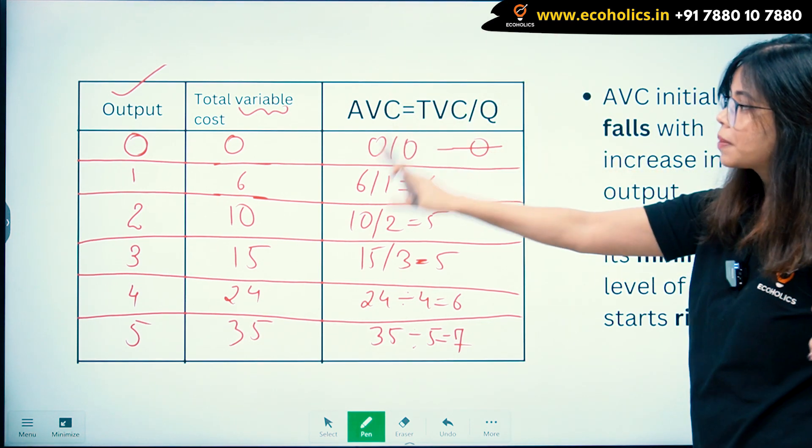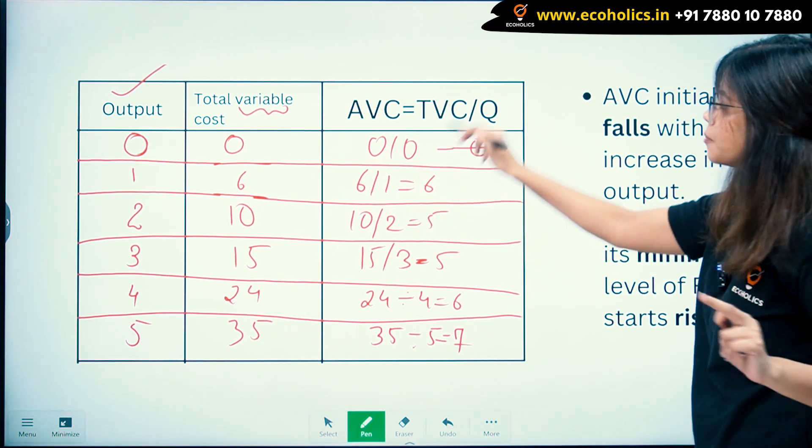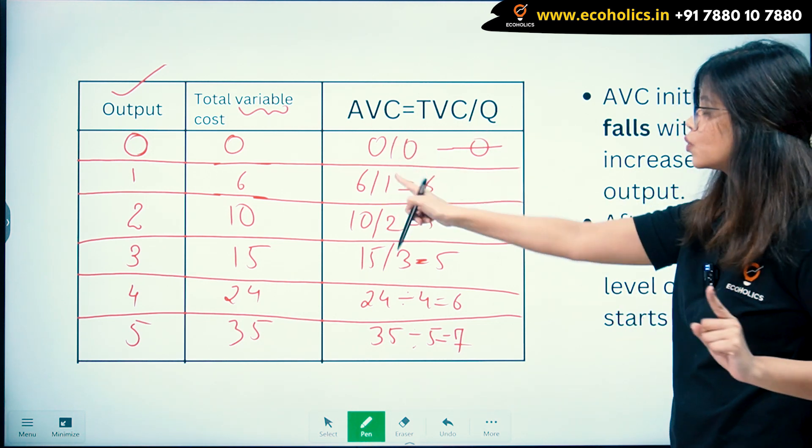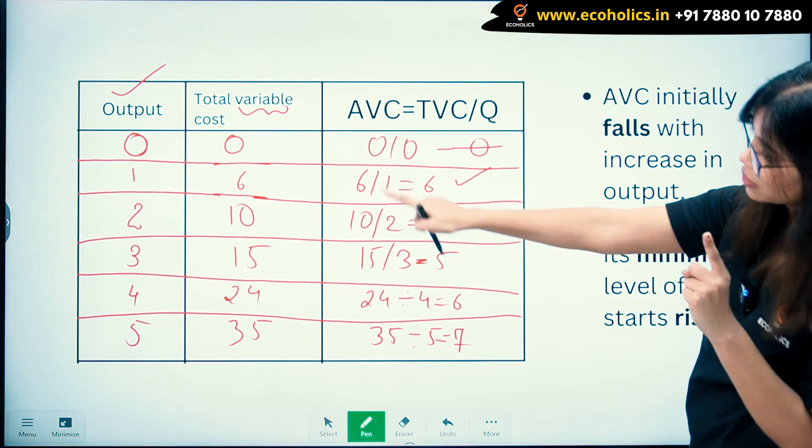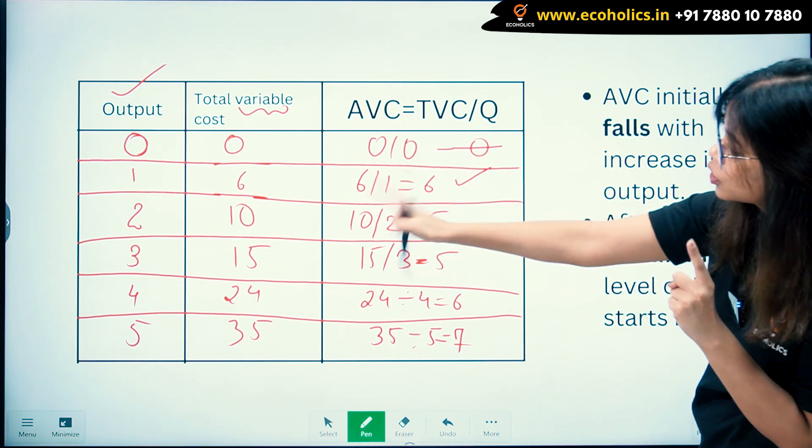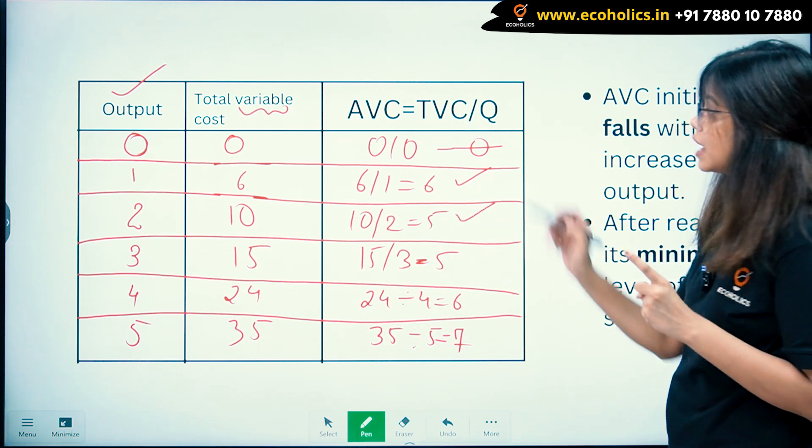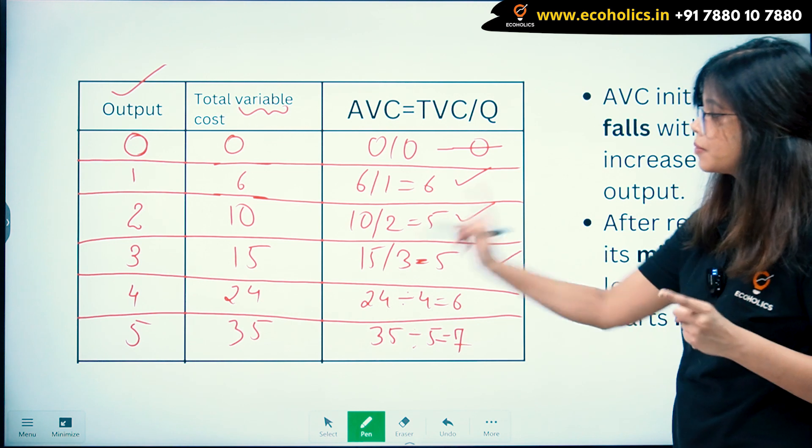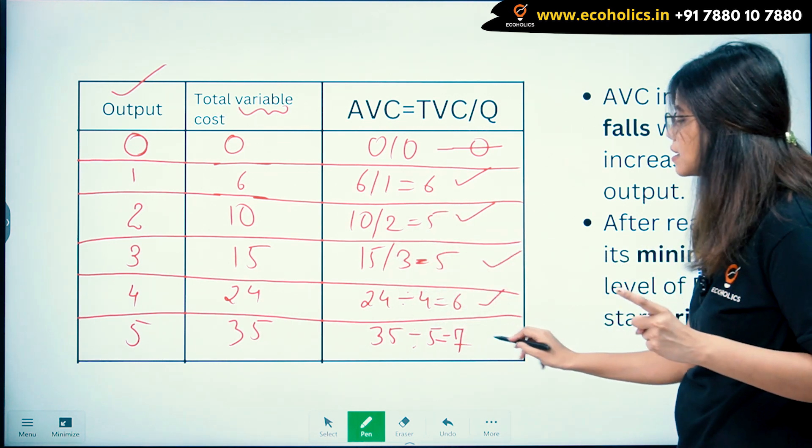Your output is 1, total variable cost is 6. In the formula, TVC is 6, output is 1, so your AVC is 6. After that, output 2, total variable cost is 10, so AVC is 5. For 15 divided by 3, you get 5 again. 24 divided by 4, you get 6. 35 divided by 5, you get 7.